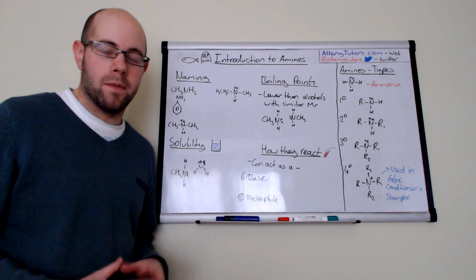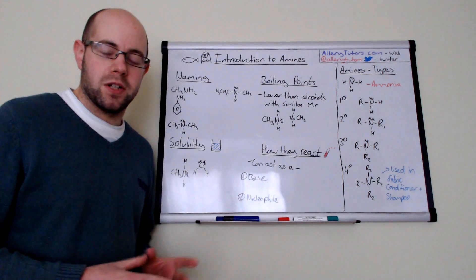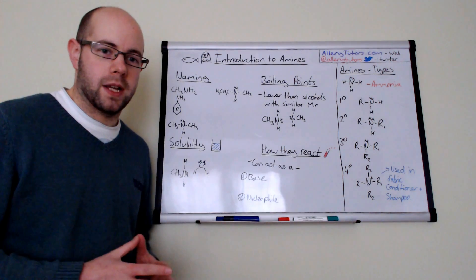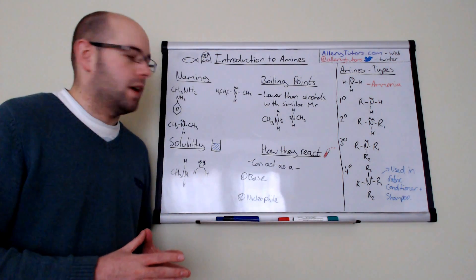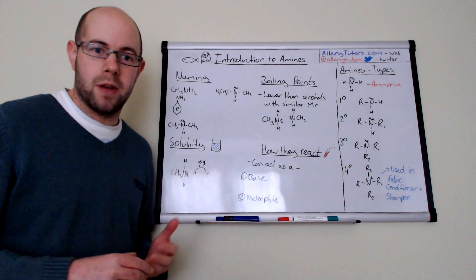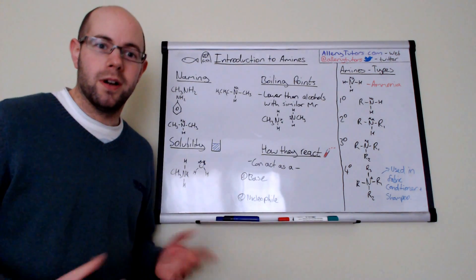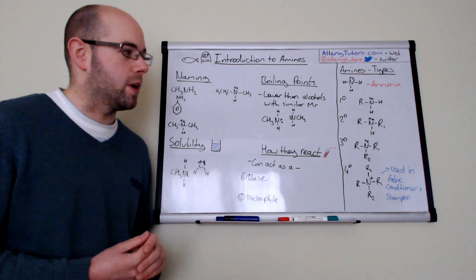Now amines come in loads of different shapes and types and they are actually a very important part of chemistry and you'll see them quite a lot. Amines can form or a subgroup of amines as amino acids which obviously are the building blocks of life so they are actually quite an important part.